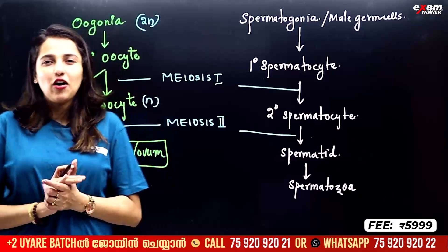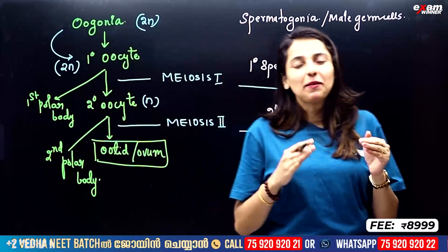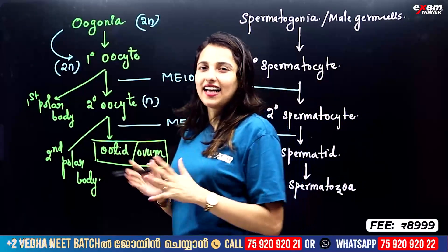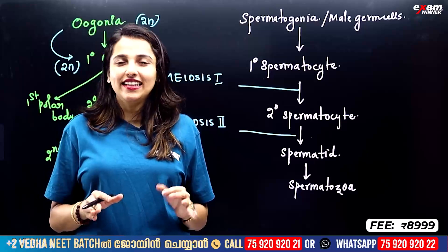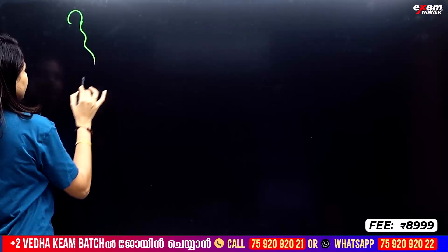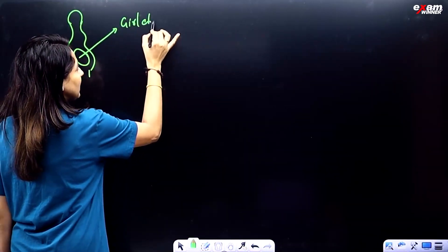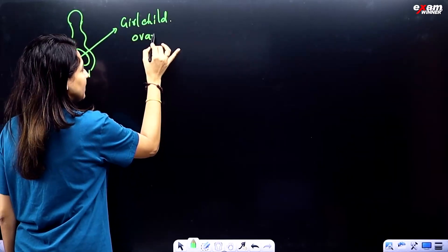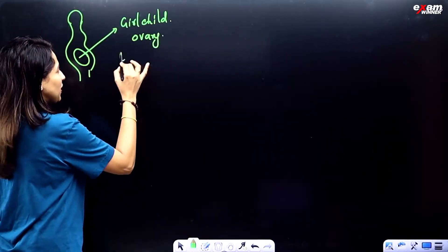Oogenesis is not a continuous cycle process like spermatogenesis. In oogenesis, stages stack up and pause. The process begins even before puberty — it starts when a female child is still in the uterus. In the uterus, in the ovary of the girl-child, this is where oogenesis starts.